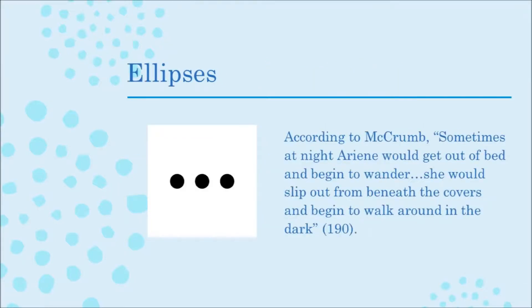Sometimes you don't need an entire quote — sometimes you only want to use part of one sentence and part of the next. An ellipsis within a direct quote indicates omitted words and allows you to just use the information that best supports your paper.